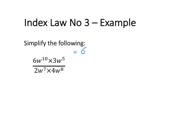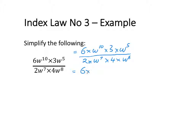That is going to be 6 times w to the power of 10 times 3 times w to the power of 5, divided by 2 times w to the power of 7 times 4 times w to the power of 8. Now I want to group my numbers and my like bases together in the numerator and denominator: 6 times 3 times w to the power of 10 times w to the power of 5, divided by 2 times 4 times w to the power of 7 times w to the power of 8.